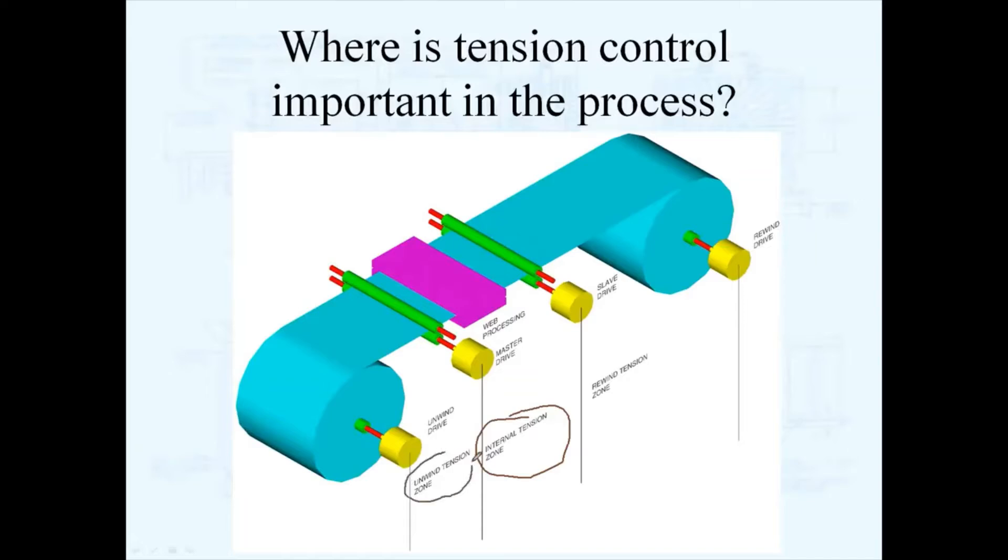You have an unwind zone, you have an internal tension zone which is your process, and then you have a rewind tension zone. You may have several internal tension zones, you may even have a couple or several unwind tension zones, but each of those zones can be categorized into one of these three types of tension zones.